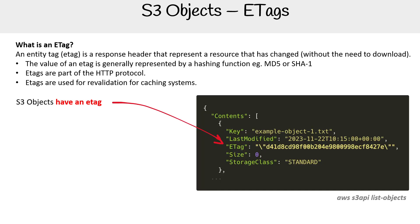S3 objects have an ETag. If you query using list objects, you will notice that there are ETags, as indicated right here in the JSON output. ETags represent a hash of an object. ETags can represent whatever the person wants them to be, but AWS has decided it represents the hash of the object or object's contents.